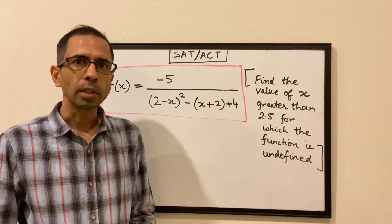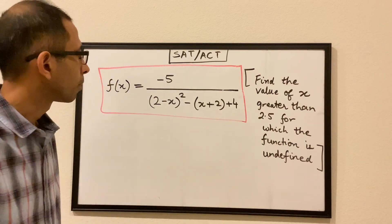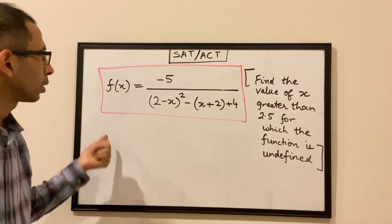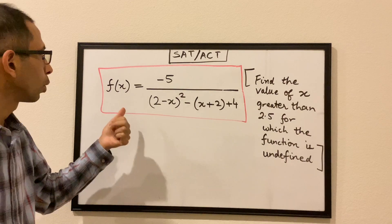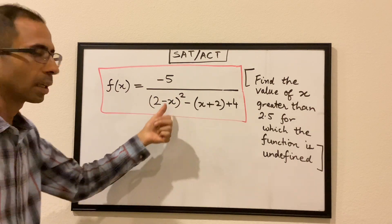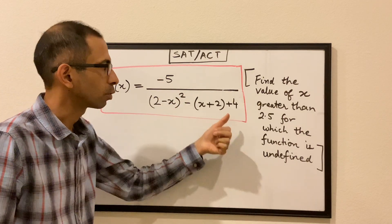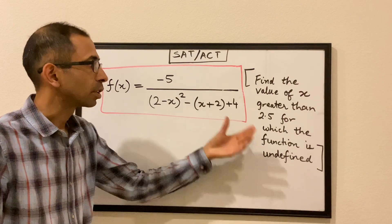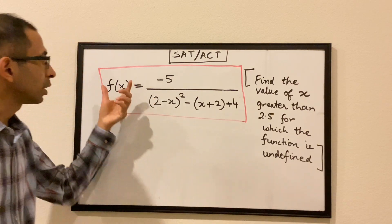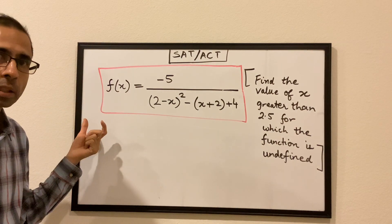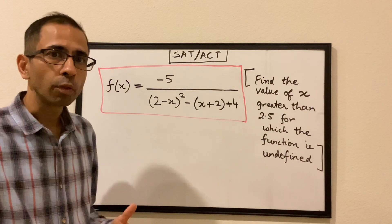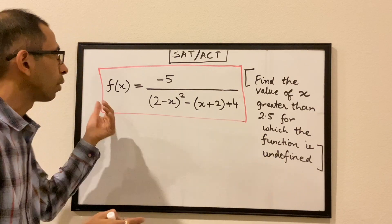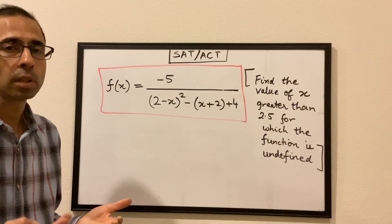Hello all, welcome to the second session of the SAT/ACT series. Let's say we have this question wherein we have been given a function which looks like what is on the board: minus 5 divided by (2 minus x) whole square minus (x plus 2) plus 4. And we have to find the value of x which is greater than 2.5 for which this function becomes undefined. So essentially we have to find the value of x which is greater than 2.5 for which the function becomes undefined.